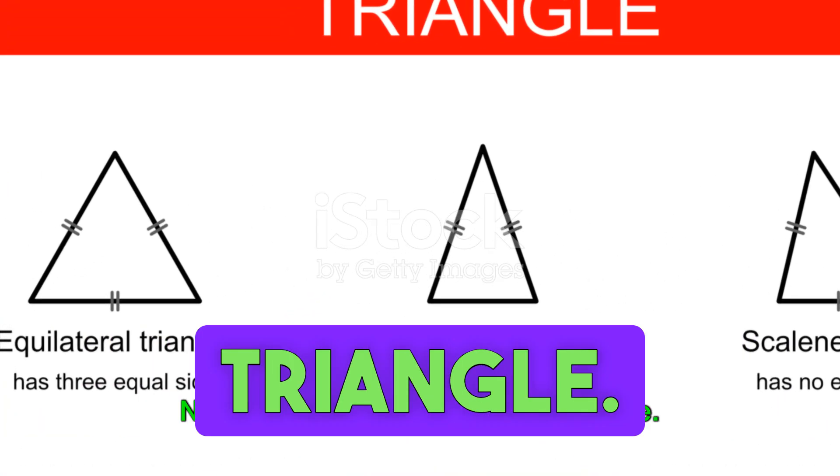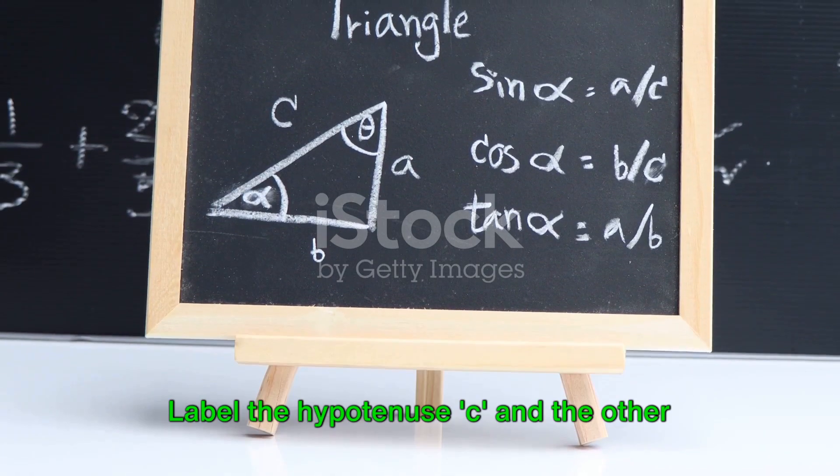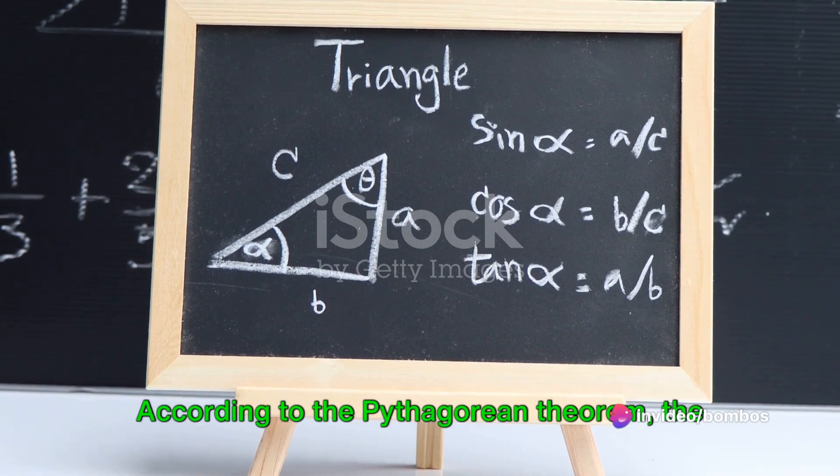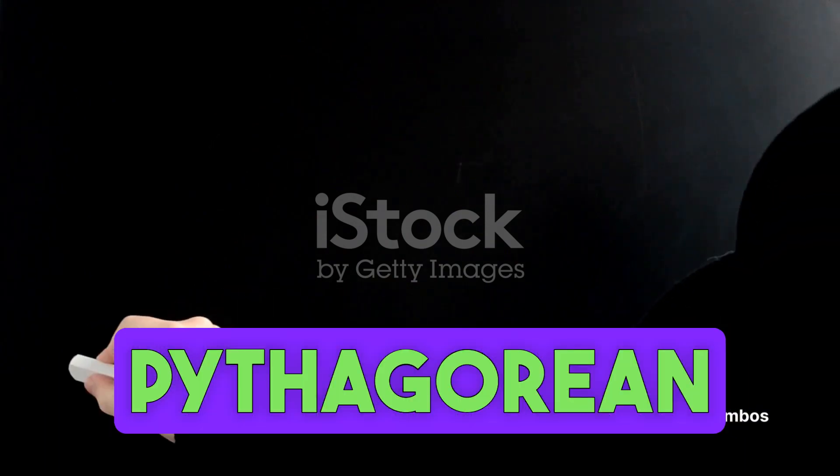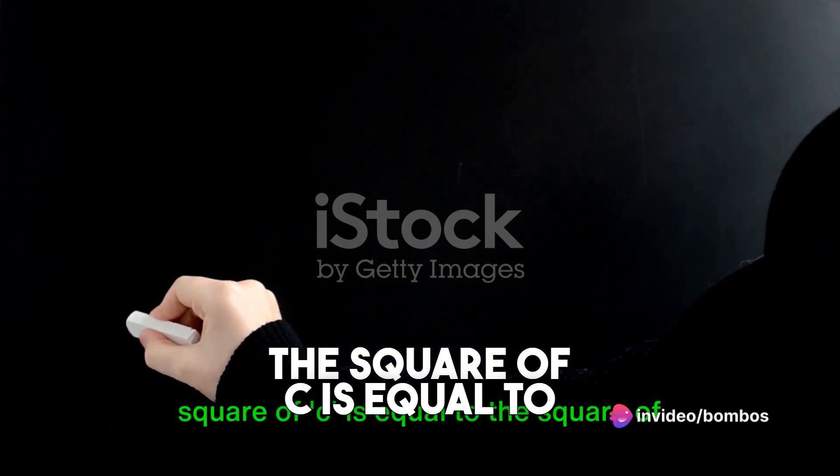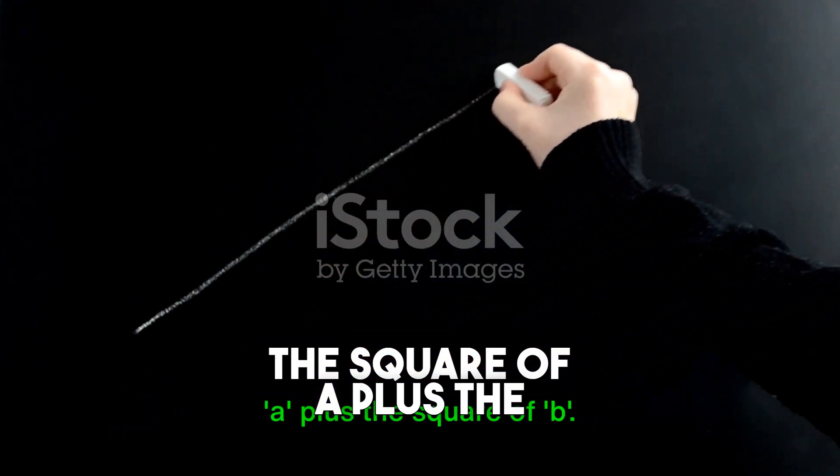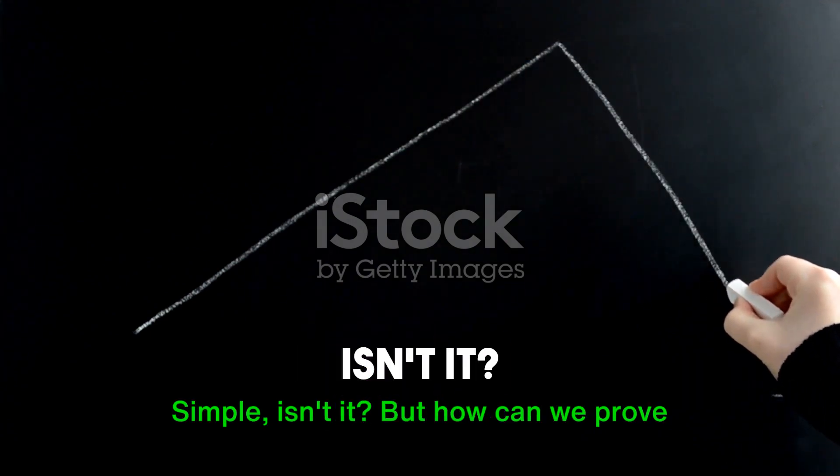Now, imagine a right-angled triangle. Label the hypotenuse C and the other two sides A and B. According to the Pythagorean theorem, the square of C is equal to the square of A plus the square of B. Simple, isn't it?